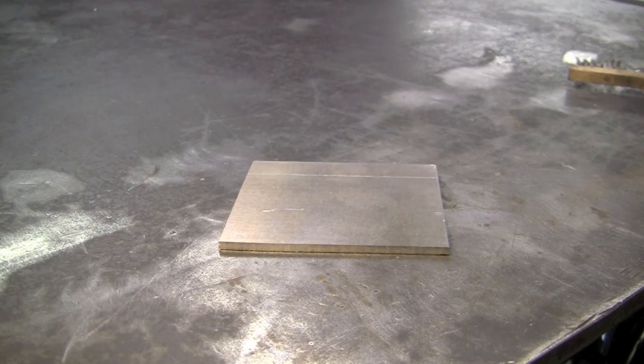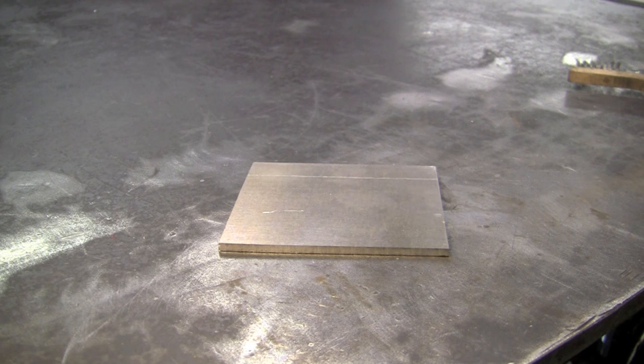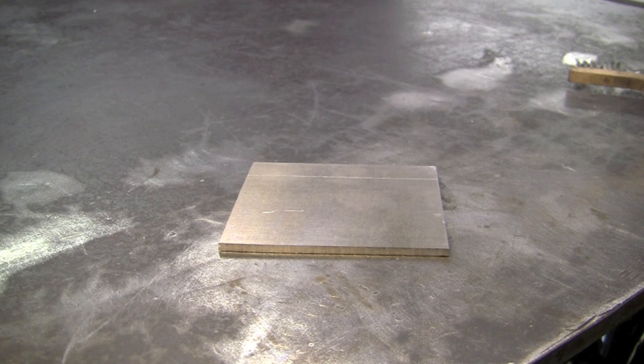For our first test piece we're going to work with some 3/16" 6061 T6 aluminum. It's the same thing I make my skid plates out of and right now we're going to work on chemically prepping this to make sure it's clean.